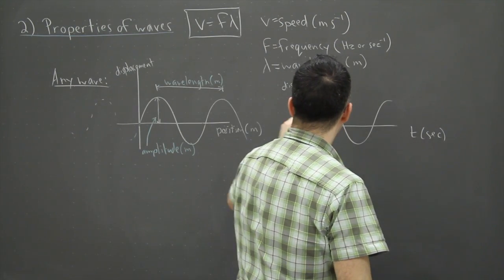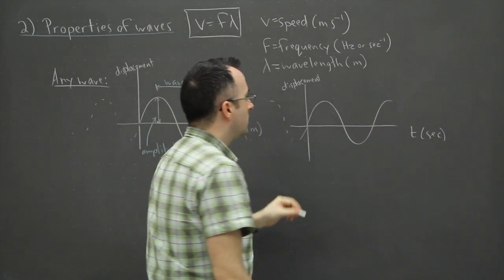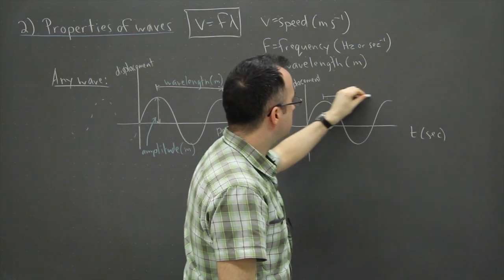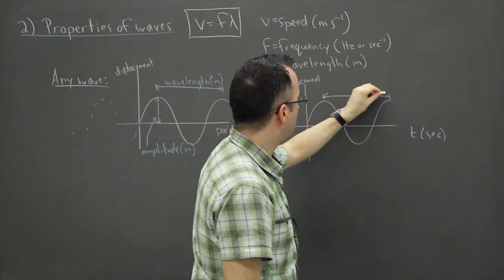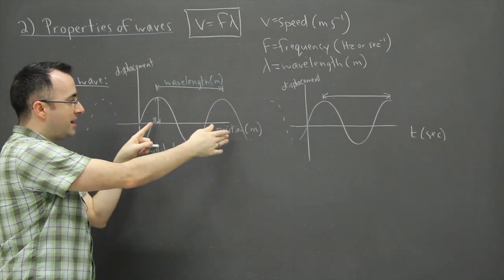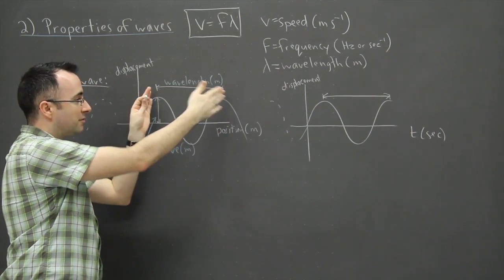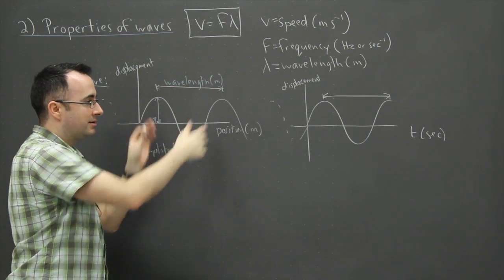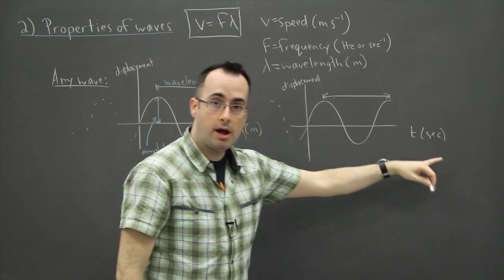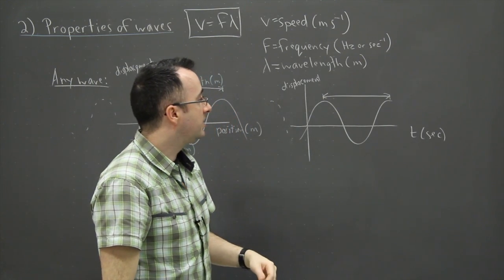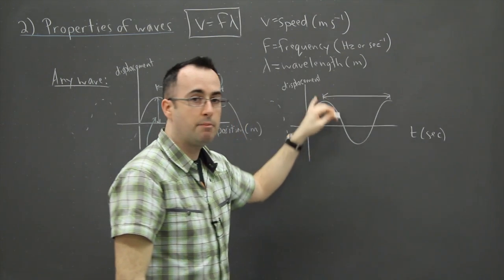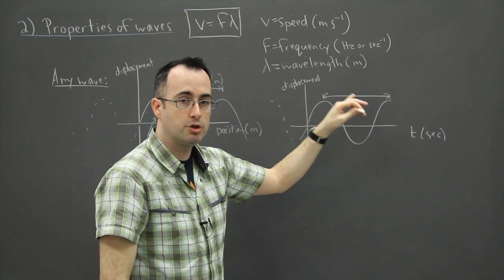If we know something about that wave and draw a similar looking wave, then this distance from here to here is no longer the wavelength. Over here we were measuring a position difference, but if we graphed time...